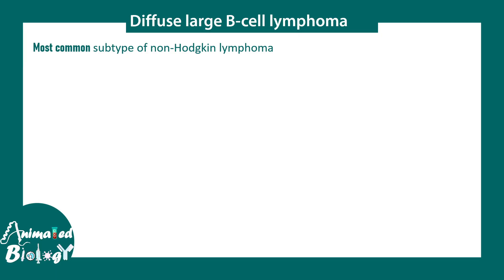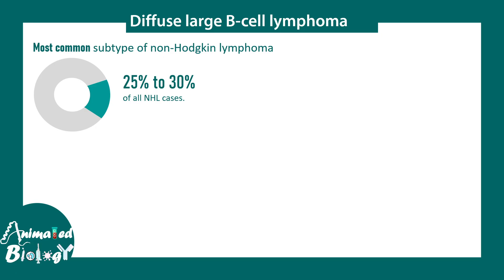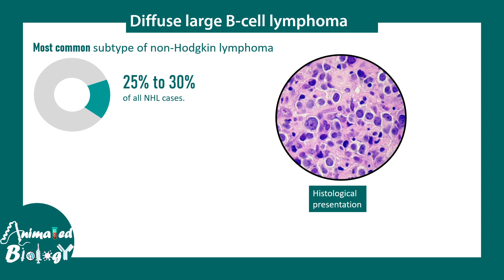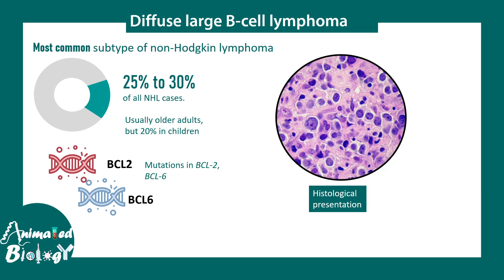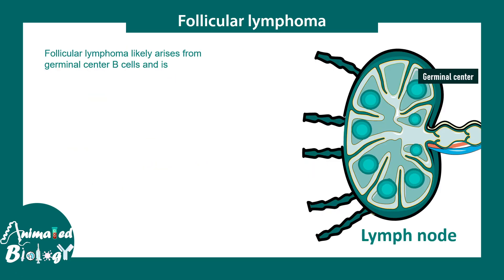Diffuse large B-cell lymphoma is the most common subtype of non-Hodgkin lymphoma, ranging from 25 to 30 percent of all non-Hodgkin lymphoma cases. Histologically you can see many B lymphocytes that are larger in size and over-proliferative. Older adults are usually affected, but 20 percent of cases come from children. Genes like BCL-2 and BCL-6 are affected in these cases.